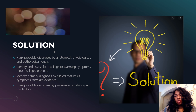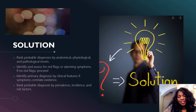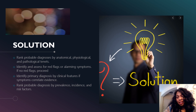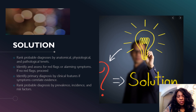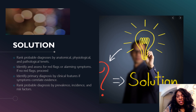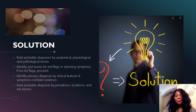Another important thing is to rank your probable diagnosis by prevalence, incidence, and risk factors. She has a risk factor of seasonal rhinitis or allergies. Prevalence can be assessed by geographic disposition — being that she's young, what kind of prevalence is occurring in the community. These are the things you need to consider to arrive at a working primary diagnosis.